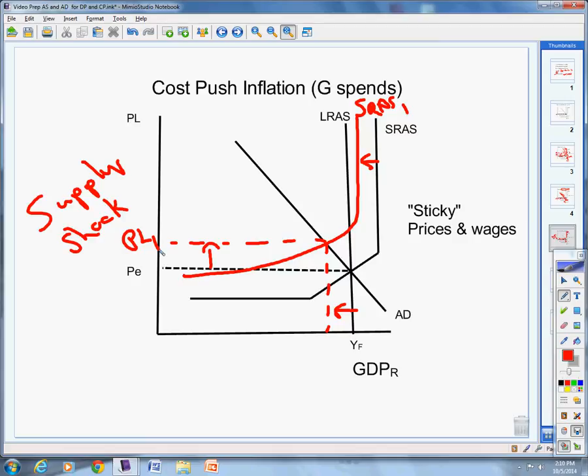Once again, there's a concern about sticky prices and wages, contracts, and all those other things. It's just hard to lower all these other things. And so, the government steps in. They spend more money. Aggregate demand increases. And, we have even more inflation.